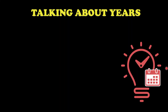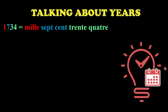Now let's see how you talk about years. Take 1734 - you take it in sequential order: first the thousands, then the hundreds, then the last two numbers. One thousand is 'mille' - when saying one thousand you don't say 'une mille', just 'mille.' Then for the hundreds value: 1700 has 700, so you say 'sept cent.' Then the last two digits, 34, you read as 'trente-quatre.'